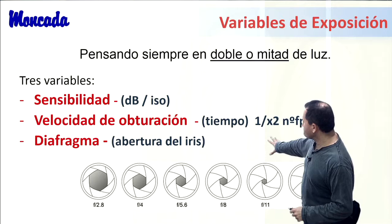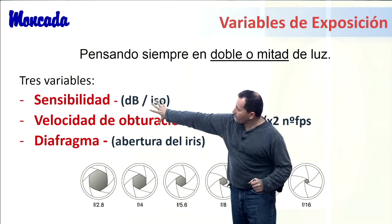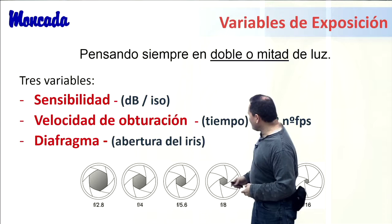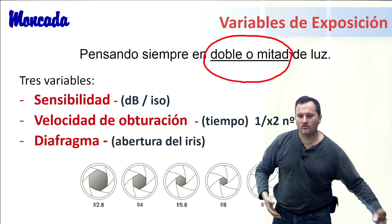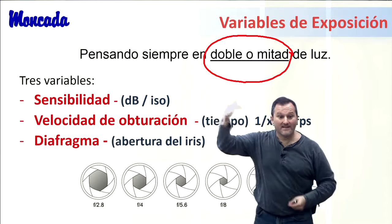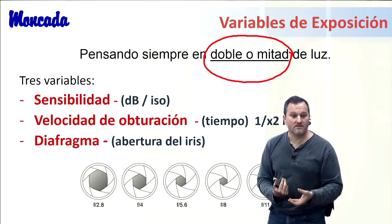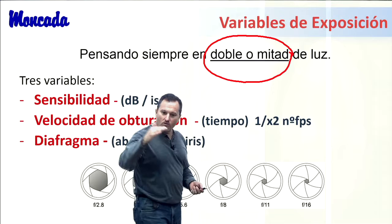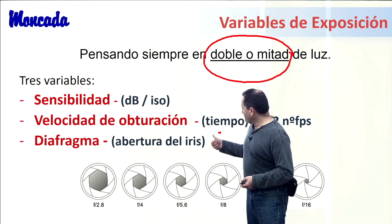La abertura del iris es la decisión de luz de imagen que más nos condiciona. Normalmente dos variables se fijan y la tercera se calcula en relación a la luz en cámara. Siempre pensamos en doble o mitad: un cierre de un punto de iris pasa la mitad de la luz; duplicar la sensibilidad equivale a un stop de luminosidad; y la velocidad de obturación sube o baja también en doble o mitad, controlando la cantidad de luz que entra en cámara.